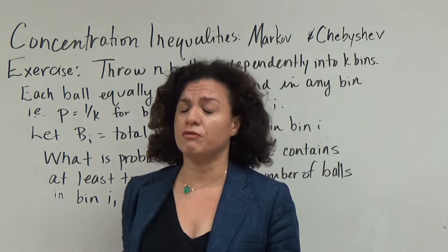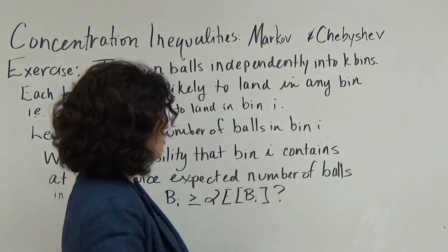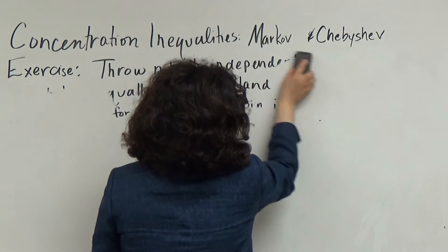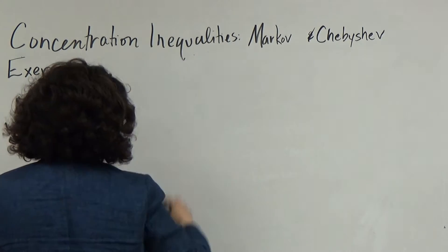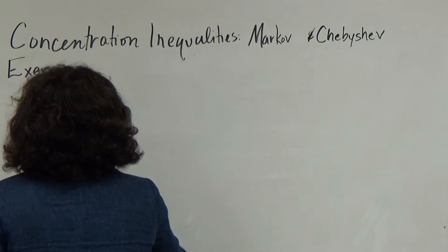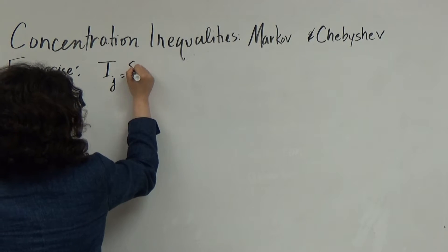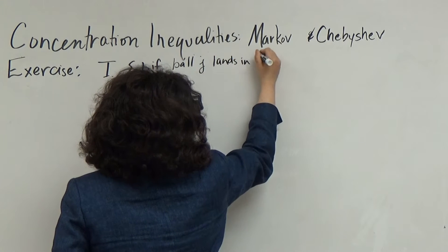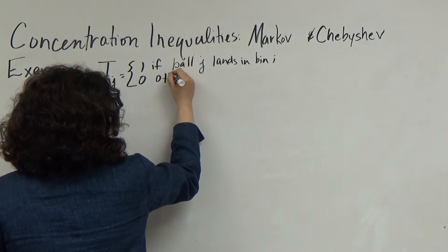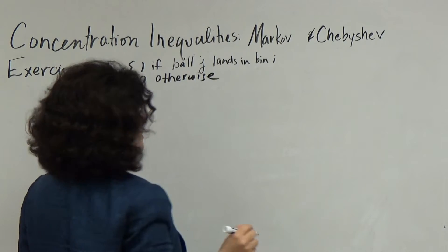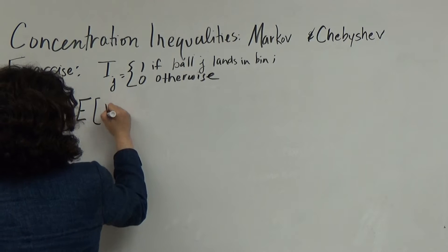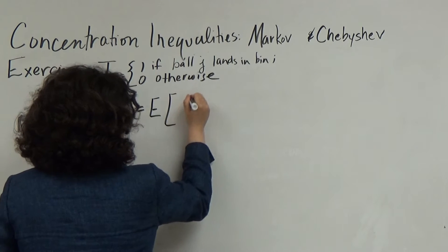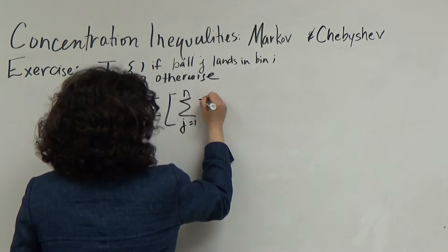In this exercise we will also review calculating expectation and variance. Let's start with the expected number of balls in bin i by expressing bi as a sum of indicator variables. Let I_j equal one if ball j lands in bin i, and zero otherwise. The expectation of bi equals the expectation of the summation from j=1 to n of I_j.